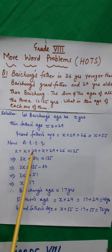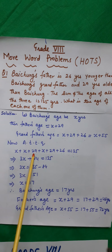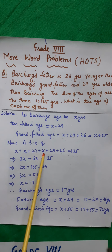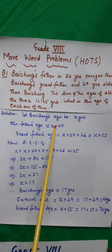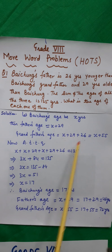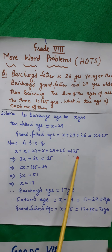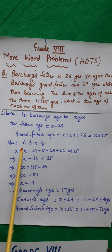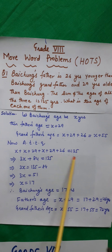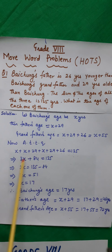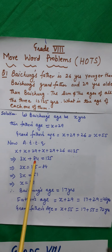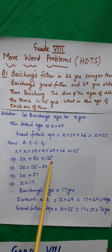Now according to the question: x plus (x plus 29) plus (x plus 29 plus 26), adding all three, we get 135. The sum of all three ages is 135. This implies 3x plus 84 is equal to 135.